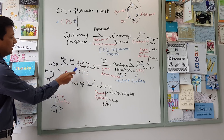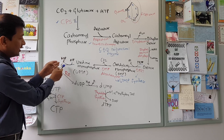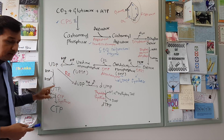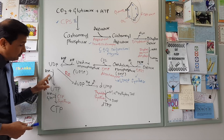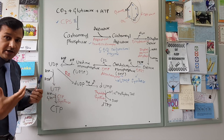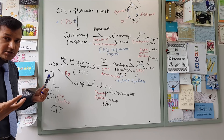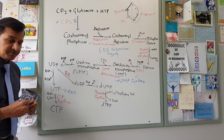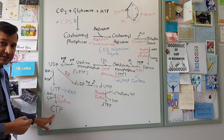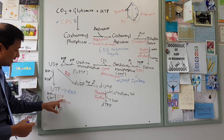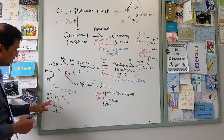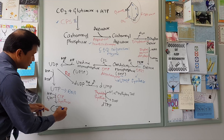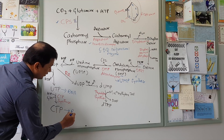UMP can be converted to UDP by taking a phosphate from ATP. UDP can then be converted to UTP by taking one more phosphate from ATP, and that UTP — uridine triphosphate — is a pyrimidine nucleotide that can go into RNA synthesis. From UTP you can make CTP, cytidine triphosphate, done by CTP synthase enzyme with glutamine as the amino group donor and consuming ATP. Once CTP is made, it is ready for RNA synthesis.